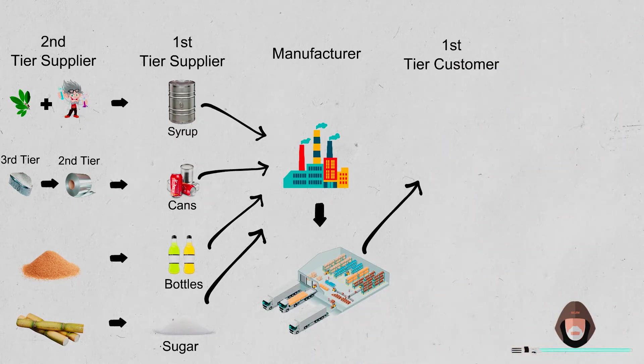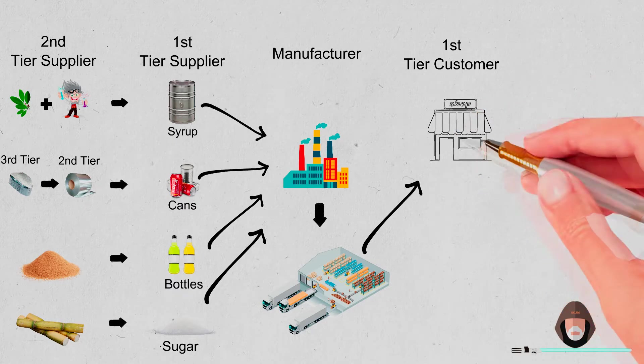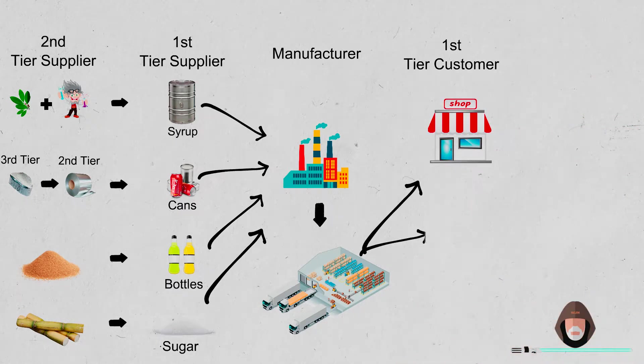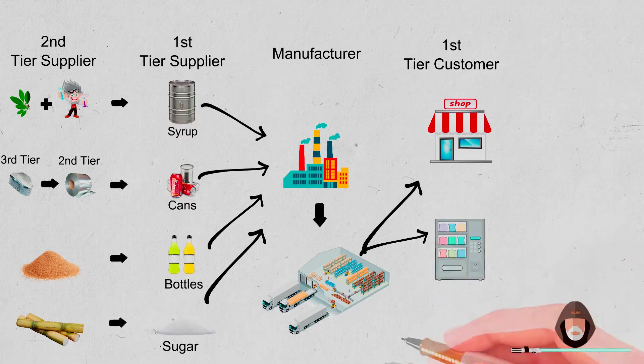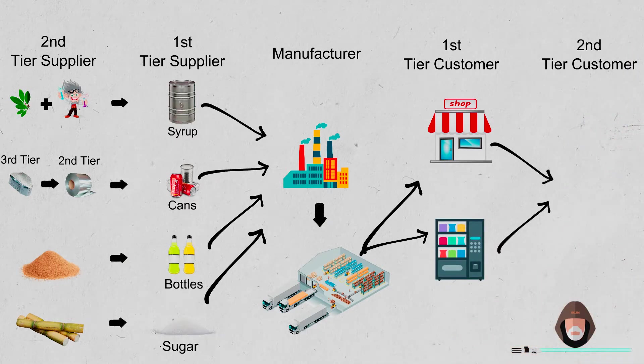Then distributes it to the first tier customers like retail shops, wholesalers and vending machines. From there, the soft drink or the finished product is purchased and consumed by the second tier customers like you and me.